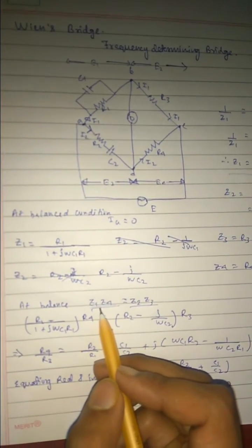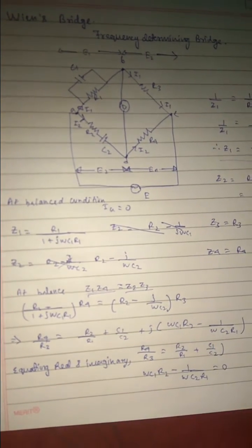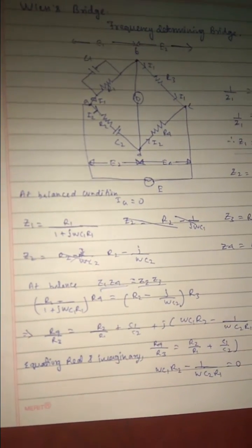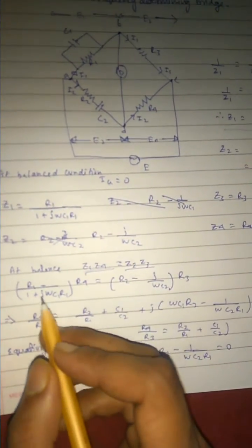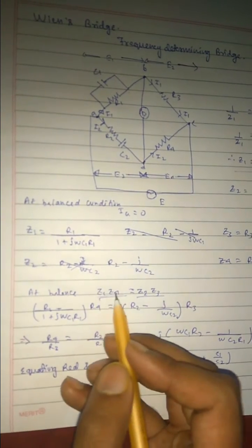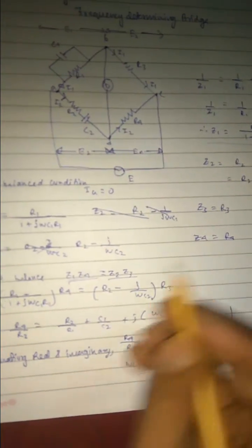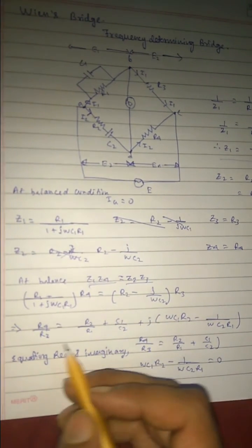Balanced condition, as we know, z1·z4 equals to z2 into z3. So now we will do the calculation. We will put the value of z1·z4: R1 by this into z4, that is R4. Putting the values, we get an expression like this.